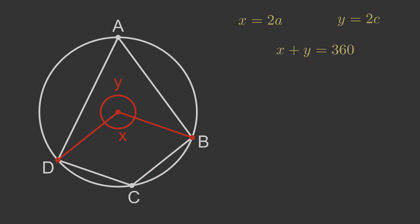Now we can replace X with 2A and Y with 2C, so 2A plus 2C equals 360. Dividing both sides by 2 proves that the two opposite angles A and C add up to 180, which is the first half of the proof.